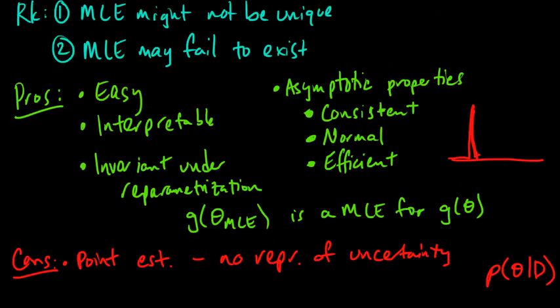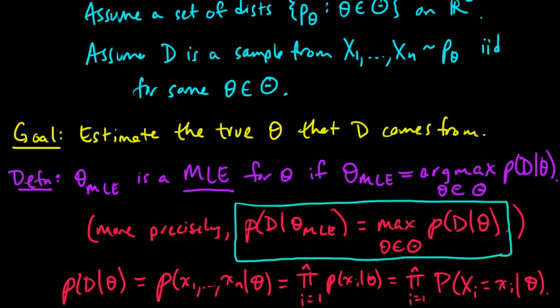And also, it may not be representative. For example, a particularly bad thing that could happen would be maybe the likelihood function spikes. By the way, this is called the likelihood function. This is called the maximum likelihood estimate because it's maximizing the likelihood function, and the likelihood function is a function of theta.